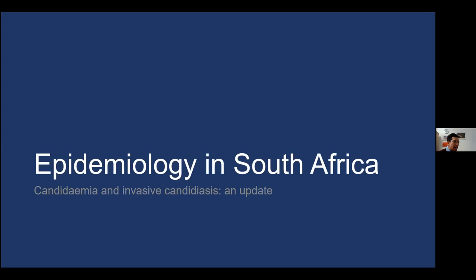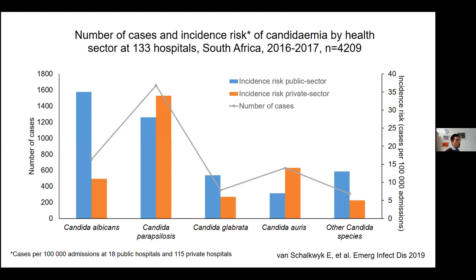Let's move on to the epidemiology in South Africa. When I talk about epidemiology, it's really going to focus on the syndrome of candidemia, because that's the syndrome easiest to delineate and define. The last time we did national surveillance for candidemia was in 2016 and 2017. We did a national laboratory-based survey, both in the public sector and the private sector, and asked all laboratories to report cases and send us the isolates.